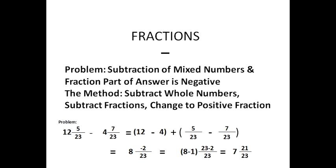Sometimes when we subtract mixed numbers we are left with a fraction where the numerator is negative, and we don't like mixed numbers with negative fractions. For example, the whole number parts give twelve minus four equals eight, but five over twenty-three minus seven over twenty-three is negative two over twenty-three. To fix this, we take one away from eight to get seven, and the denominator is twenty-three, so the numerator becomes twenty-three minus two, which is twenty-one. The final answer is seven and twenty-one over twenty-three.